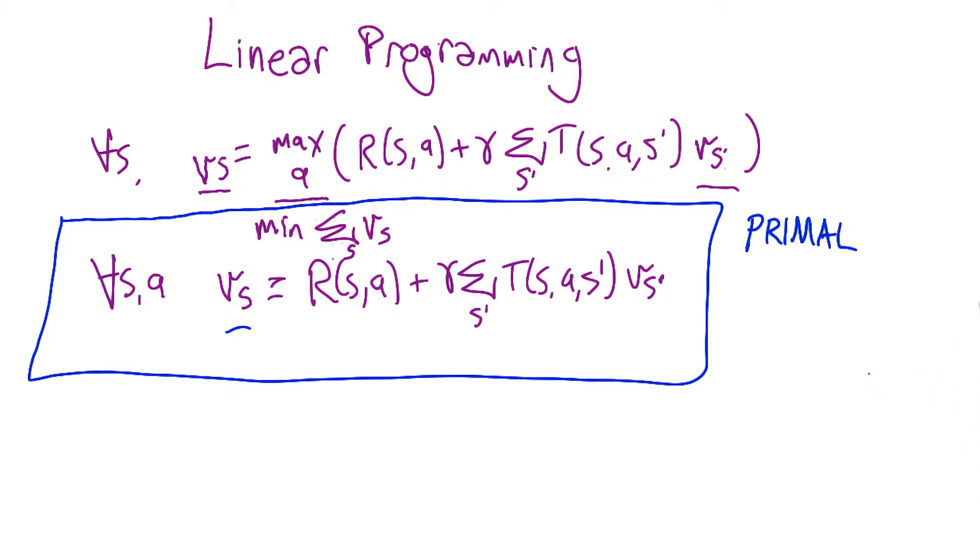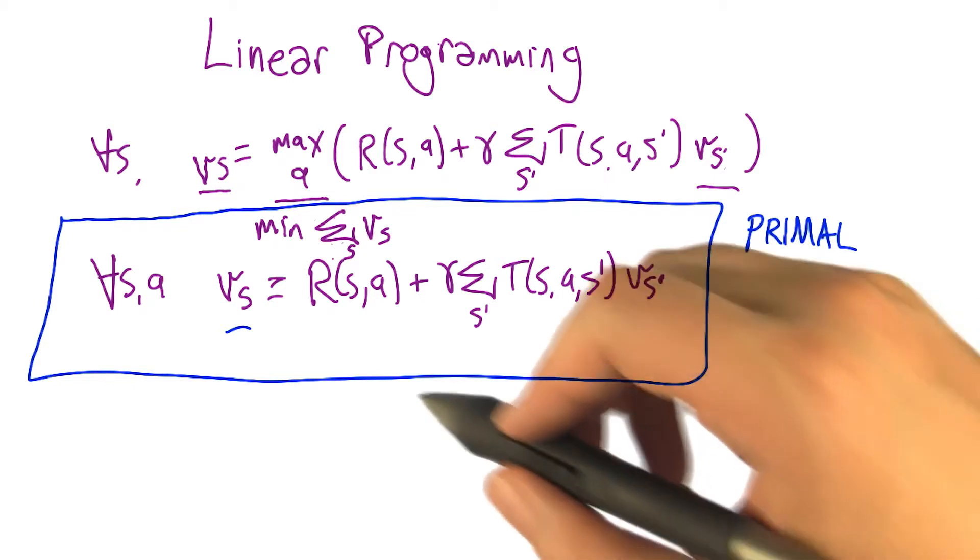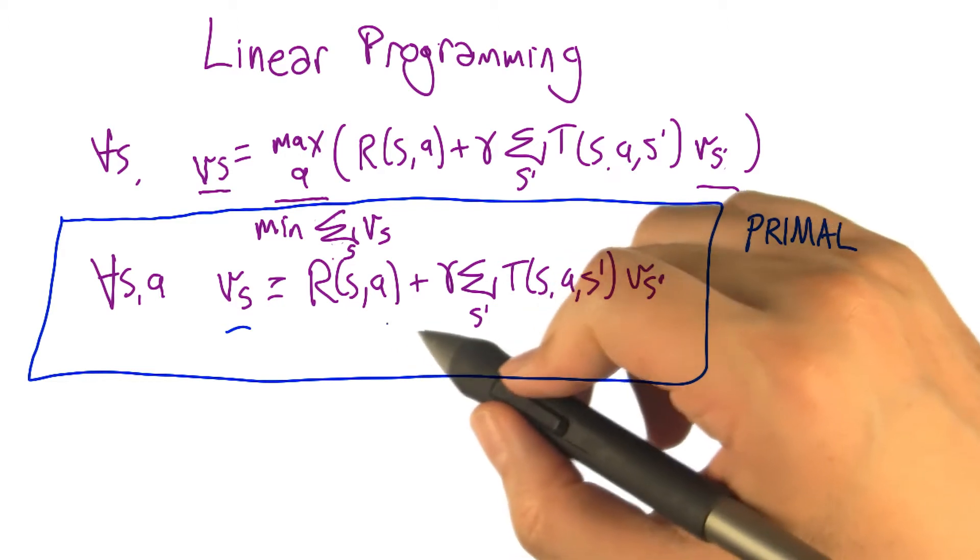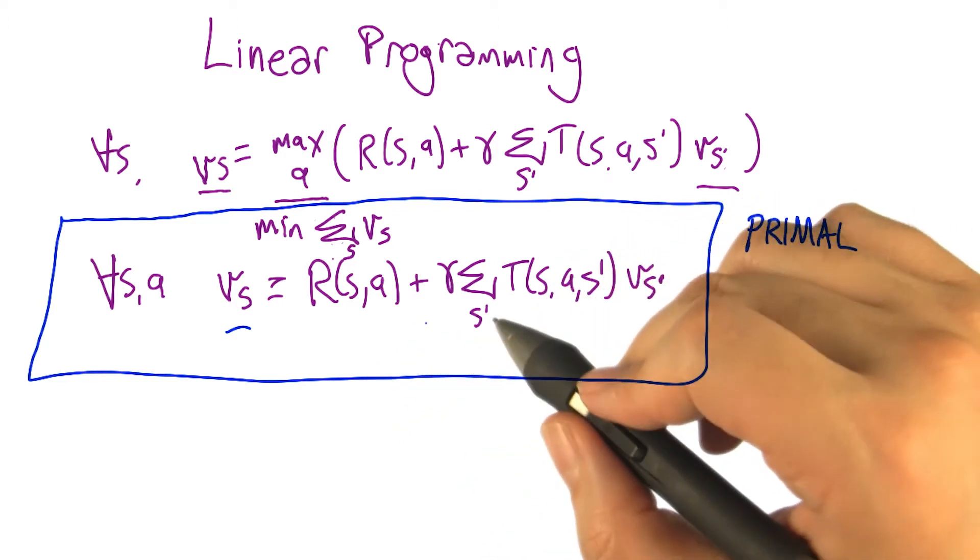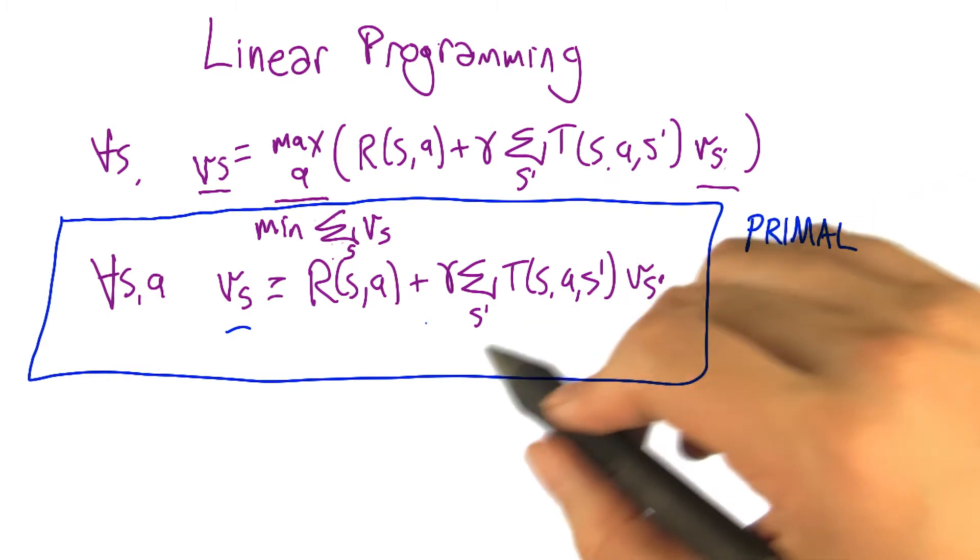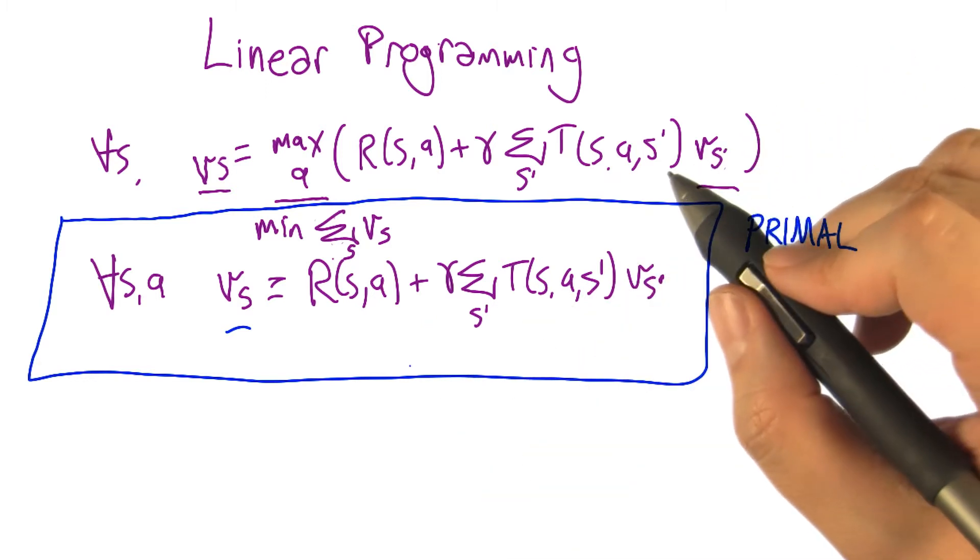By switching away from the primal to what's called the dual. So linear programming has this nice property that you can actually, any linear program, you can change the constraints into variables, and the variables into constraints, and you get a new linear program that's equivalent to the old one. So this is just true in general for linear programming. It's linear programming duality.